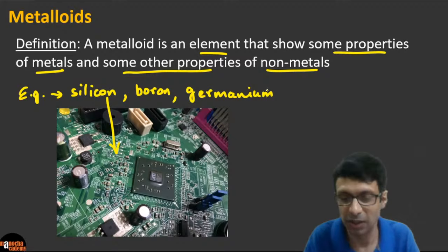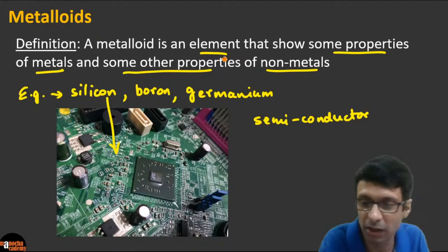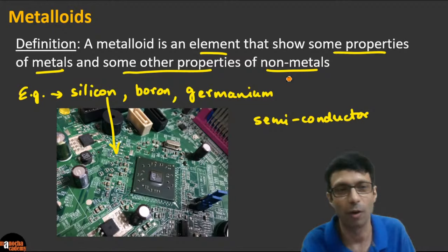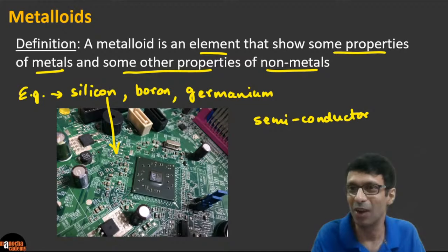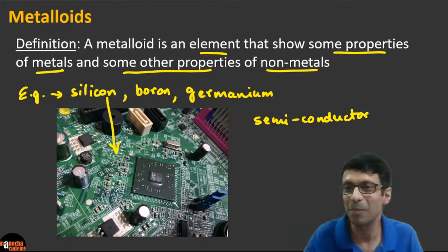Silicon and germanium are semiconductors — they are neither very good nor bad conductors. Silicon runs the semiconductor industry. That's why we have Silicon Valley in the United States. Other metalloid examples include boron and germanium.